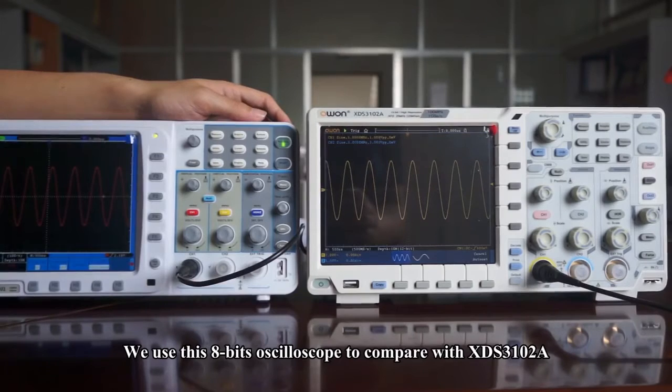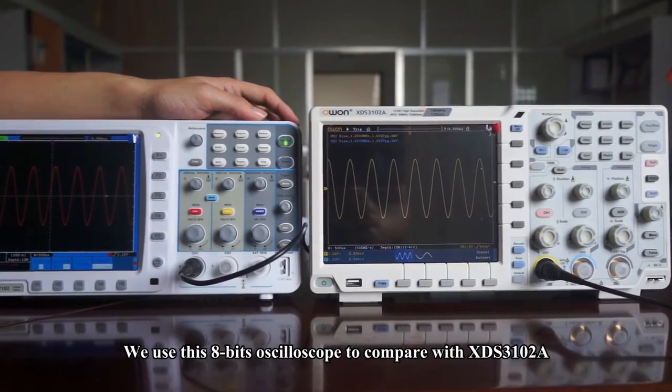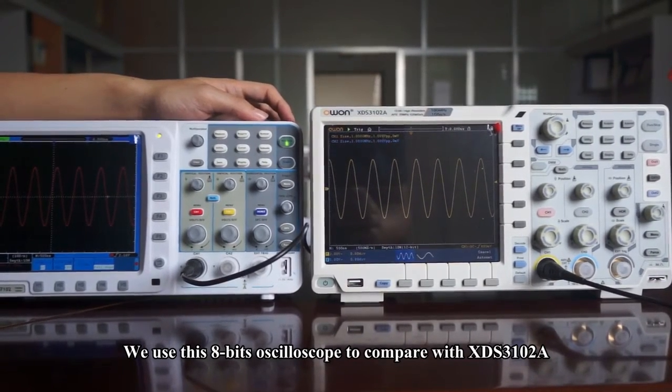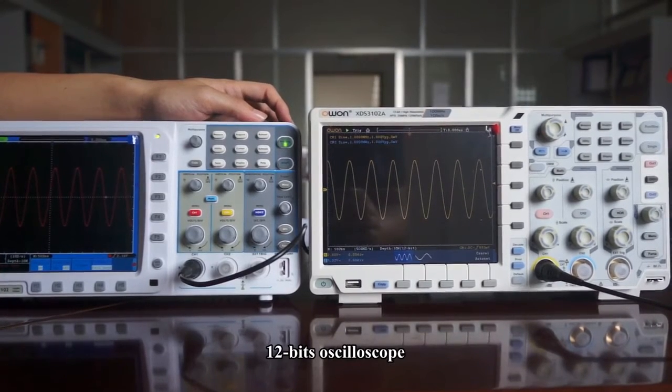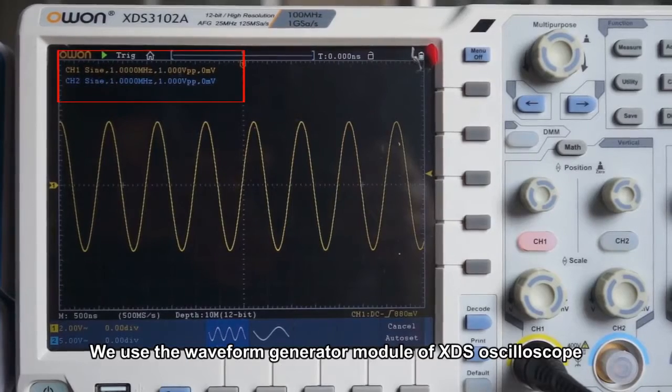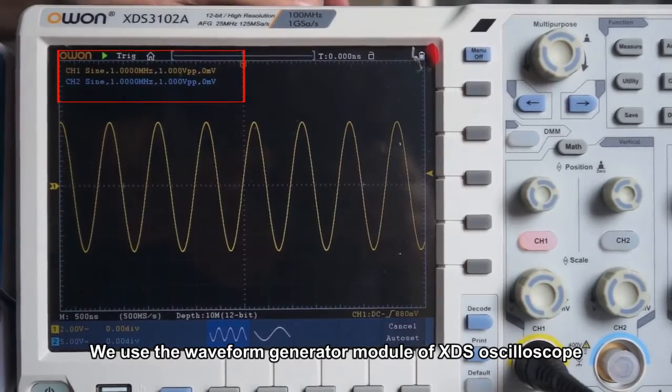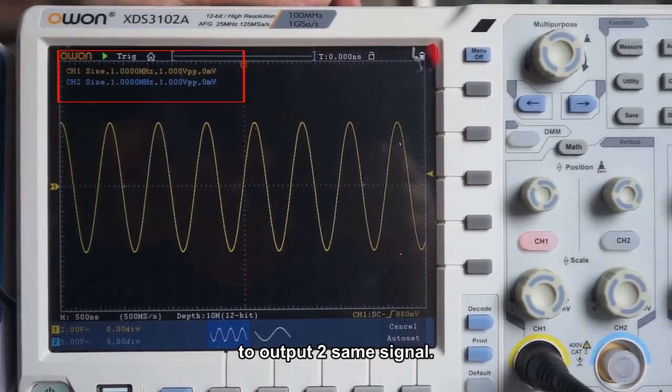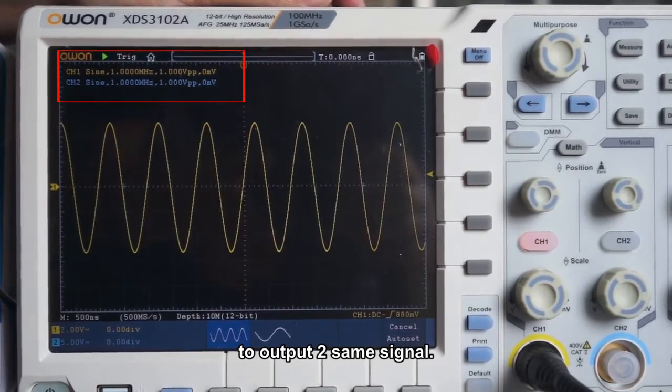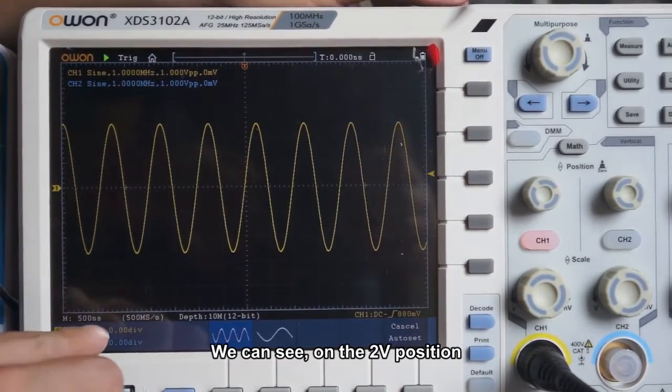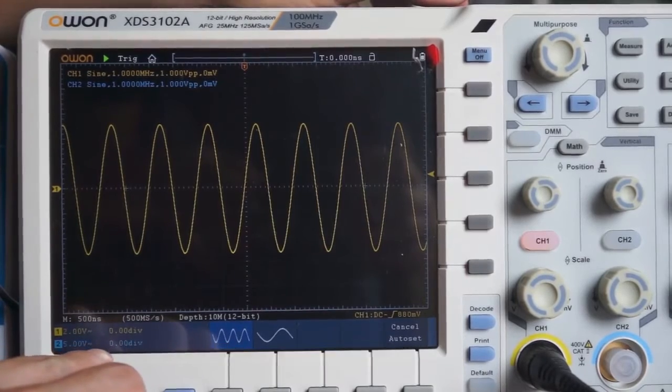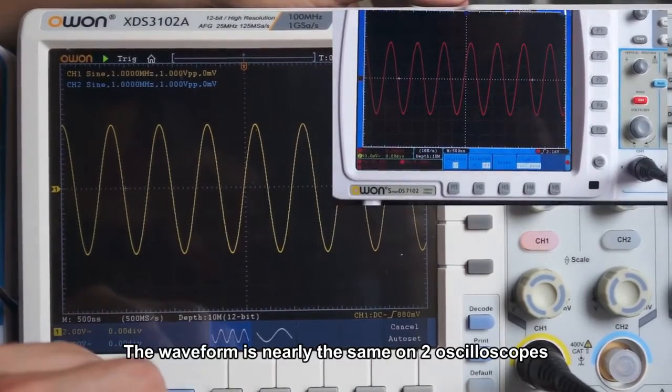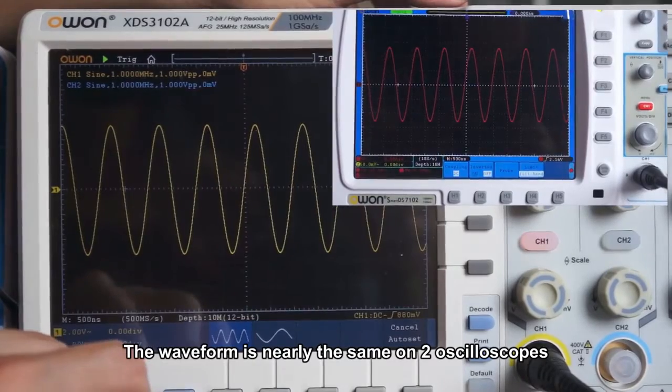First, we use this 8-bit oscilloscope to compare with XDS3102A 12-bit oscilloscope. We use the waveform generator module of XDS oscilloscope to output two same signals. We can see on the two-voltage position, the waveform is nearly the same on two oscilloscopes.